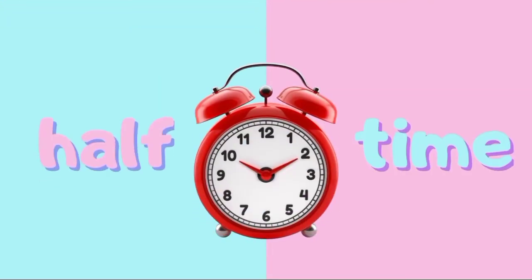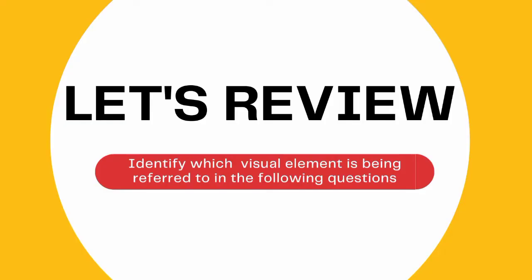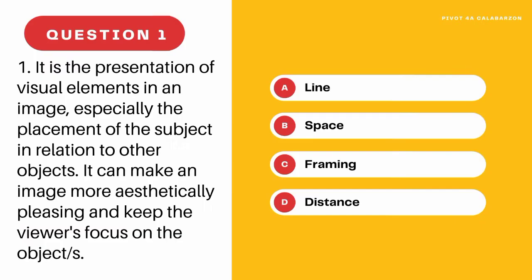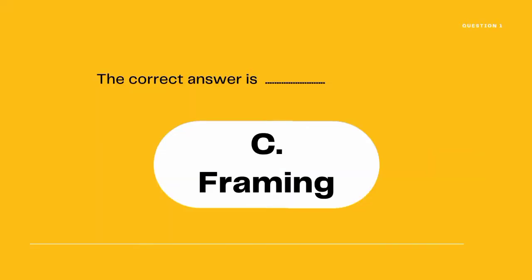There's our half-time reminder. Time to check what you have learned. Let's review. Identify which visual element is being referred to in the following questions. Question number one: It is the presentation of visual elements in an image, especially the placement of the subject in relation to other objects. It can make an image more aesthetically pleasing and keep the viewer's focus on the object or objects. A. Line, B. Space, C. Framing, D. Distance. The correct answer is C. Framing.